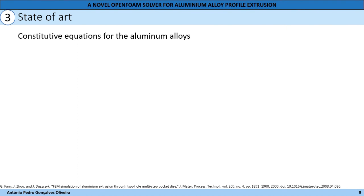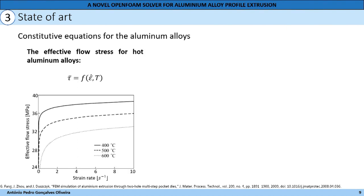Now, in the state of the art, we consider the constitutive equations for aluminum alloys. Effective flow stress is a function of temperature and effective strain rate. By checking the graph, it can be seen that an increase in strain rate increases effective flow stress. However, an increase in temperature reduces effective flow stress. These relations are made through mechanical characterization tests of aluminum alloys, however they will not be discussed during this presentation.